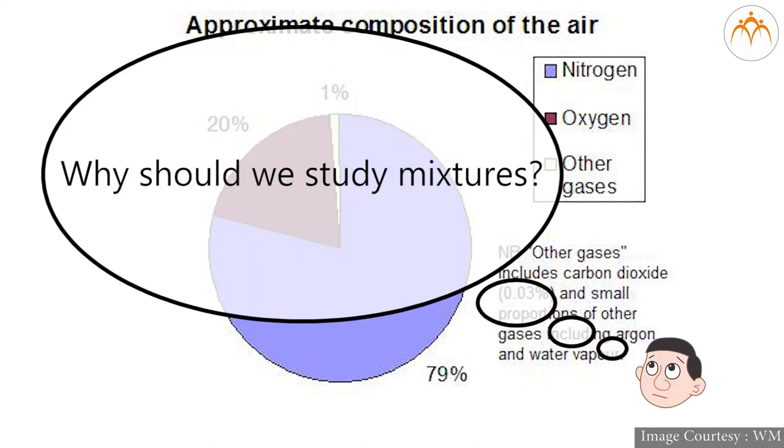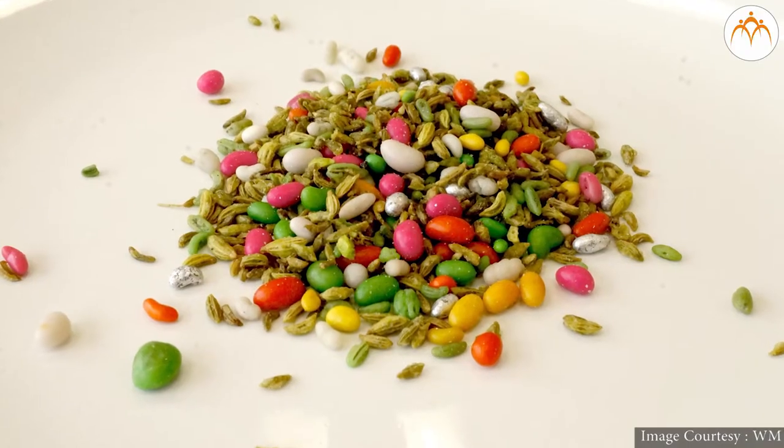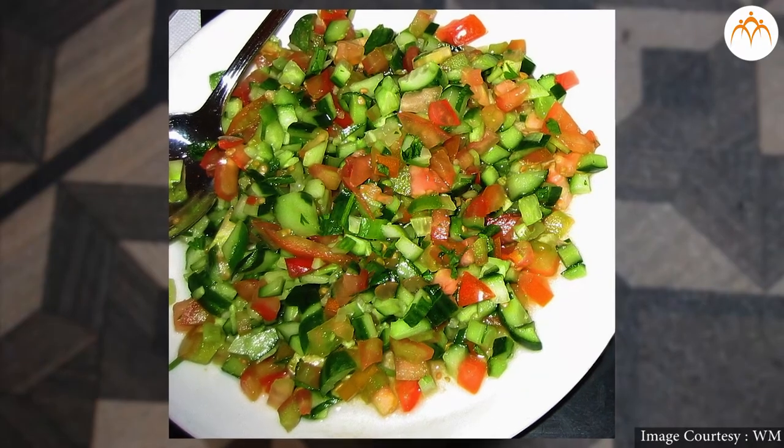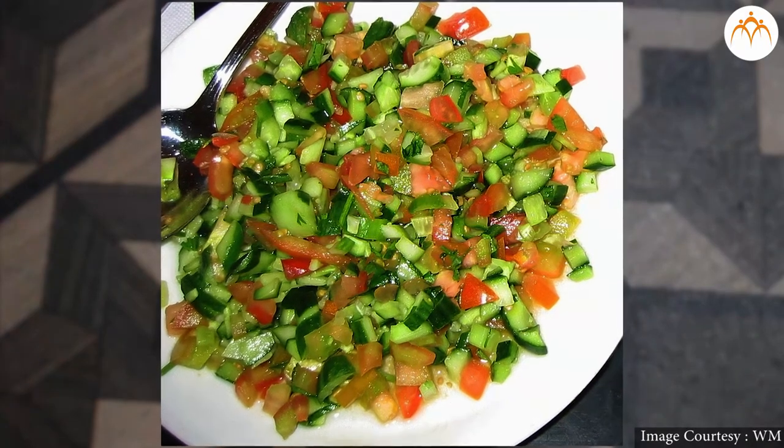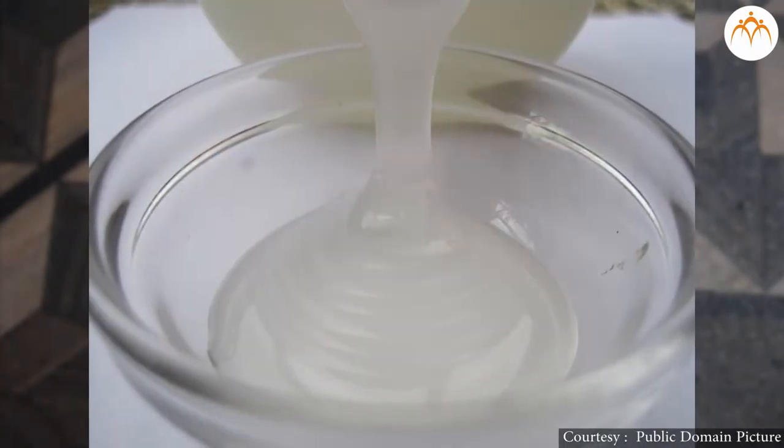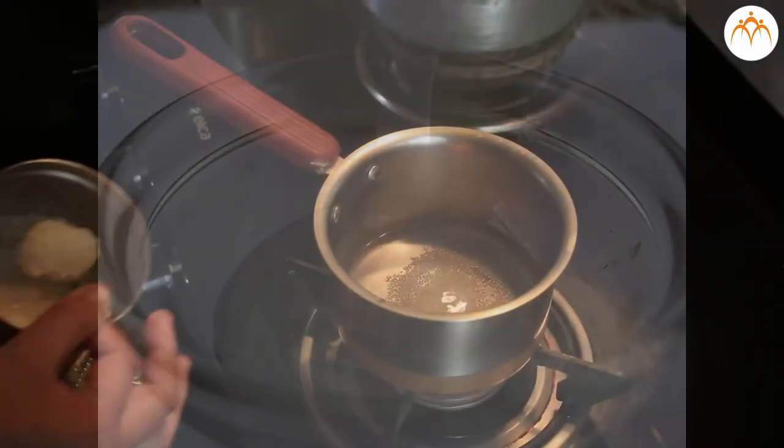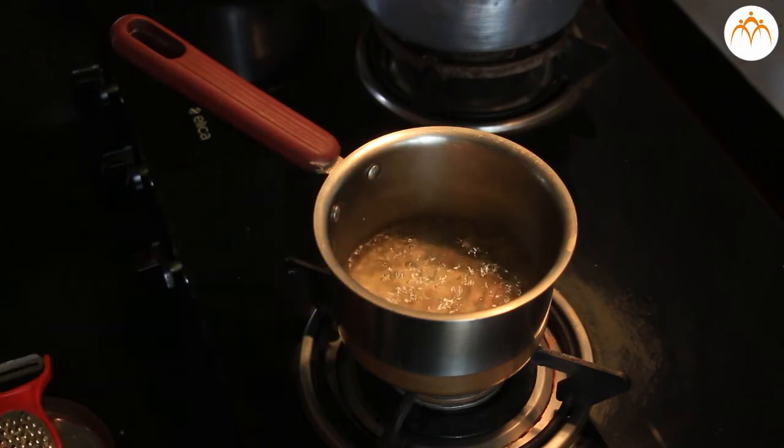Why should we study mixtures? Many times mixtures are made on purpose. For example, the salad or koshimbir that we eat is a mixture of lots of different ingredients. Or the soap we use also has components like cleanser, color, and fragrance in it. We mix things together to perform a specific task.